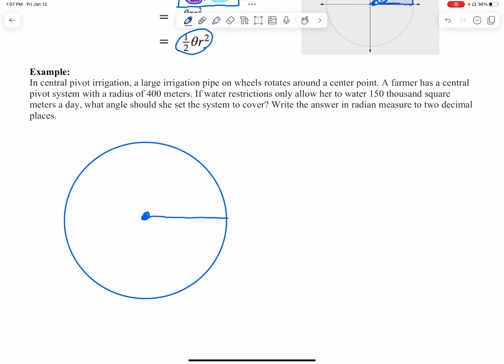If water restrictions only allow her to water 150,000 square meters a day, what angle should she set the system to cover? So what we're talking about here is—they're not telling us to find the area, they gave us an area.